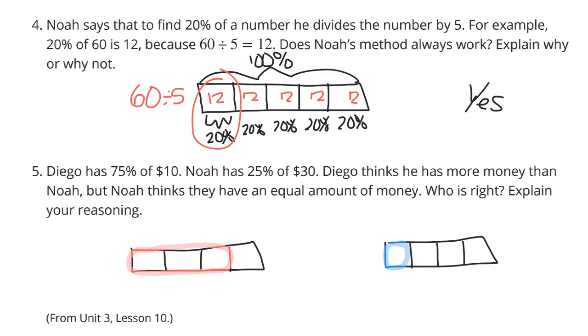So again, 75% of $10 for Diego. We can take that 10 and divide by 4 to get $2.50. So each of these blocks is $2.50. Diego has three of these blocks, so that is going to be $7.50 for that 75%.